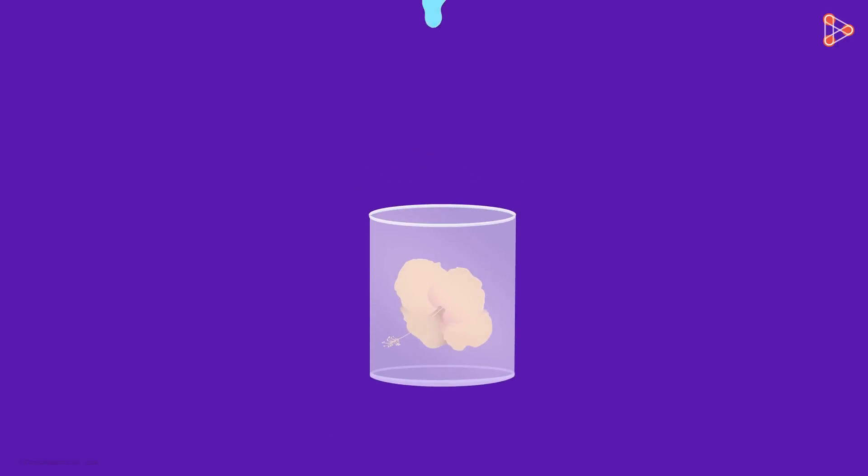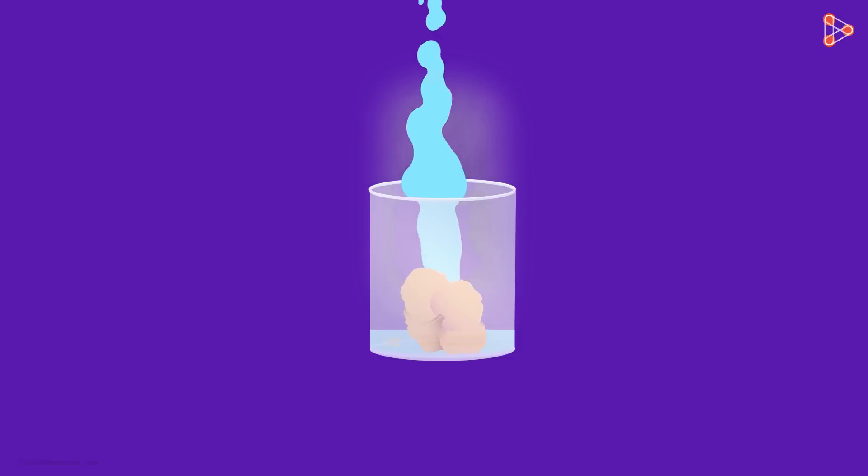All we have to do is add hot water to the petals of China Rose in a beaker and let it rest for some time. This solution can be used as an indicator.